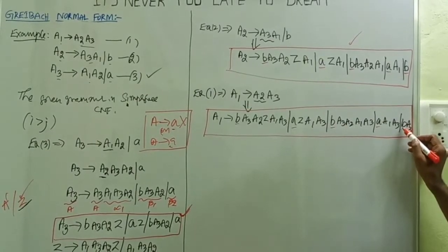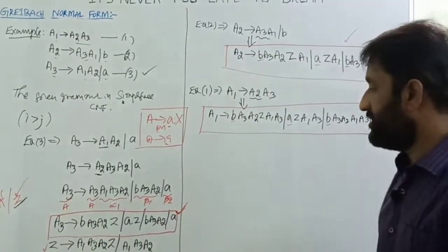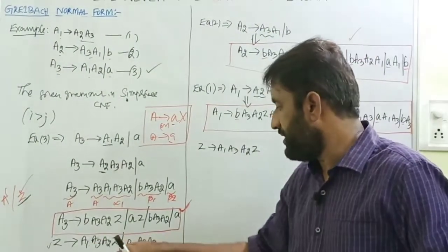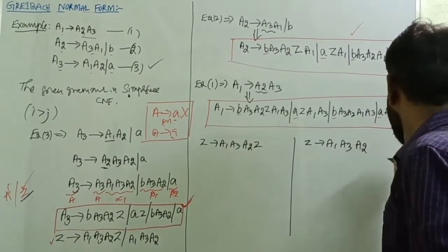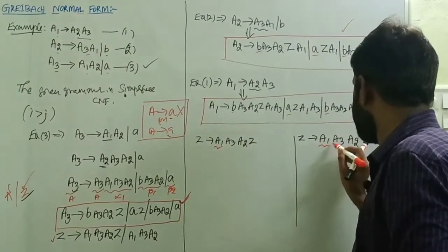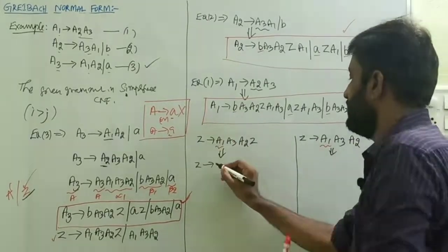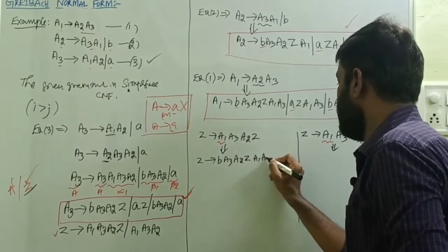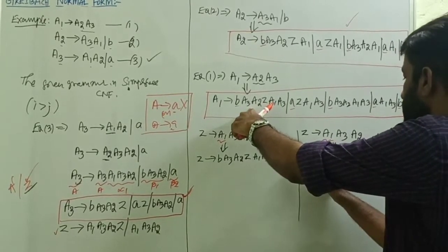The only productions not yet converted are the Z productions. Z tends to A1 A3 A2 Z and Z tends to A1 A3 A2. Substitute A1 productions into the Z productions. Writing them out in parallel: Z tends to b A3 A3 A2 A3 A2 Z A1 A3 then A3 A2 Z, and continuing with the substitutions.